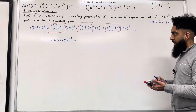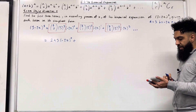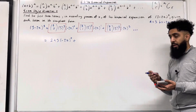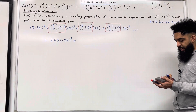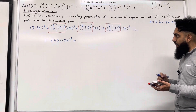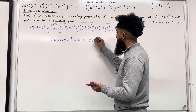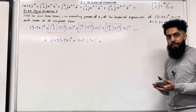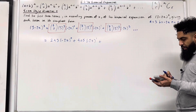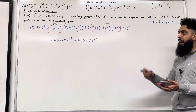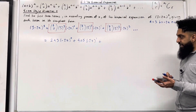Second box: 5 choose 1 — typing 5, shift, divide, 1 — gives 5. 5 multiplied by 3 to the power 4 gives 405. So the second box simplifies to 405. Third box: 5 choose 2 — typing 5, shift, divide, 2 — gives 10. 10 multiplied by 3 to the power 3 gives 270. So the third box simplifies to 270.